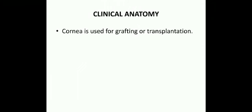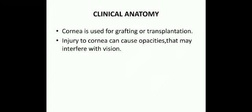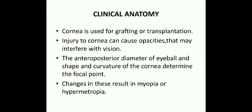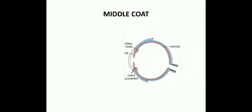The cornea is supplied by the ophthalmic nerve and short ciliary nerves. Clinically, the cornea is used for grafting or transplantation as it is avascular. Injury to the cornea can cause opacities that may interfere with vision. The anterior-posterior diameter of the eyeball and the shape and curvature of the cornea determine the focal point; any change results in either myopia or hypermetropia.